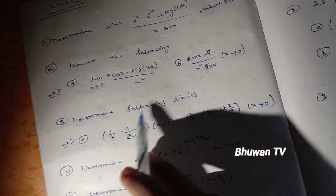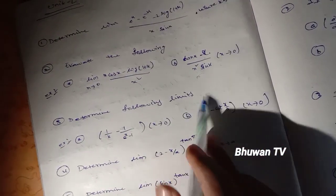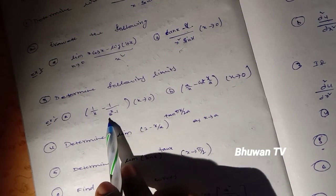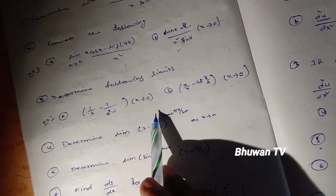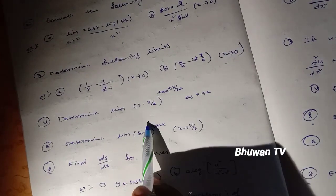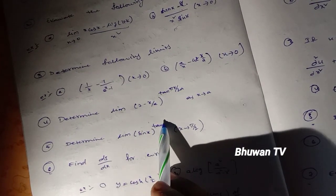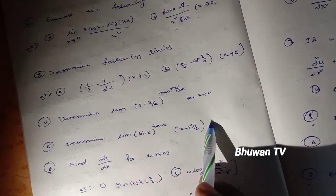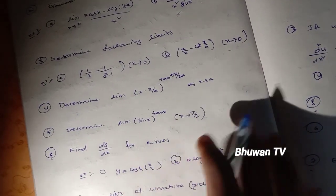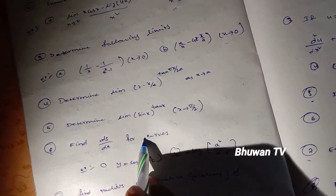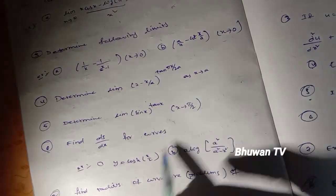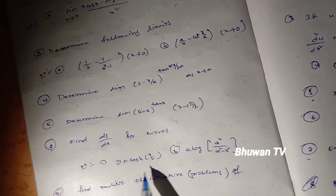Determine the following limits: (1) limit as x tends to 0 of (1 plus x)^(1/4) minus x; (2) limit of (2 minus x/a)^(tan(πx/2a)) as x tends to a; (3) limit of (sin x)^(tan x) as x tends to π/2.